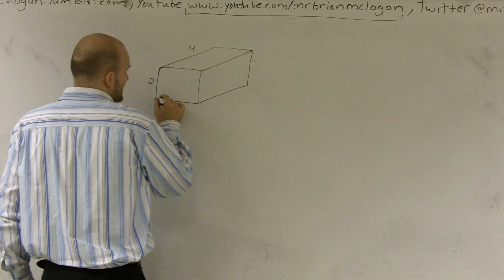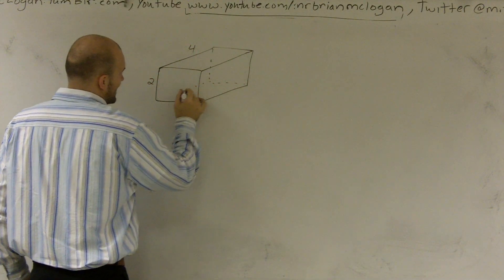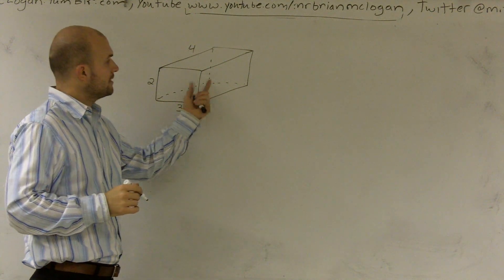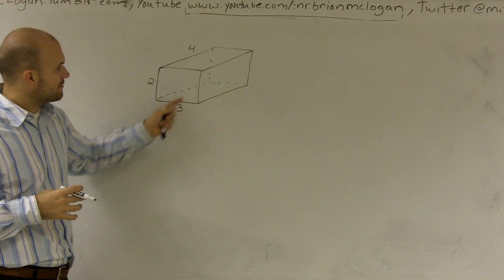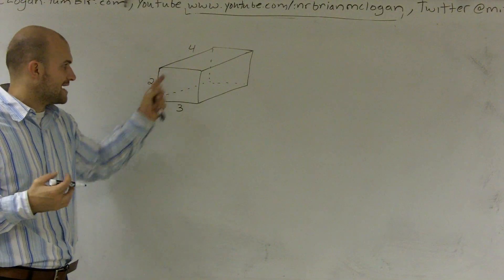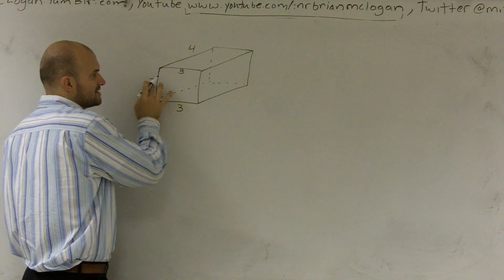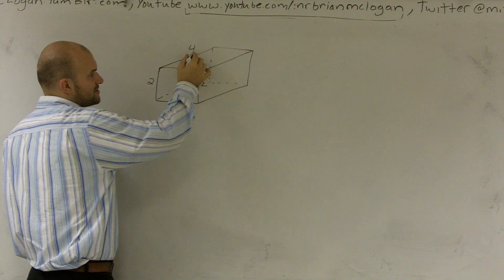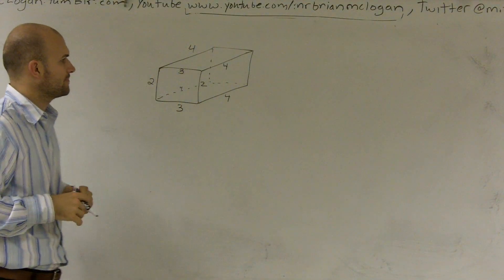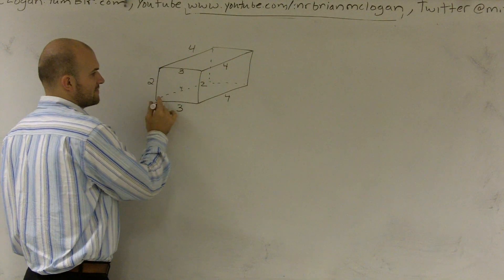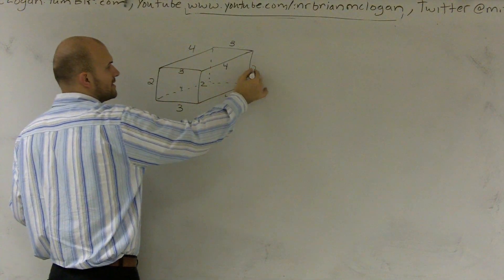To calculate the surface area, there are a couple of sides we cannot see. I'm going to draw dotted lines to represent those — there is a bottom, a back side, and a left side. Rectangles have opposite sides that are exactly the same. So if this bottom is 3, the top is 3. If this is 2, that's 2. If here is 4, that length is 4, and so on. The width of 3 means the back is also 3, and if this length is 2, the other side is 2.